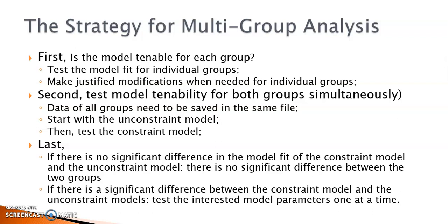Then we test the constrained model, in which model parameters of interest are set to be equal across groups and the overall model fit indices are estimated. In the last step, we compare the model fit — in particular, model chi-square values — to see if there is a significant difference between the constrained and the unconstrained models. If there is no significant difference, we conclude that the model structure fits all groups equally well and there is no difference in the model parameters between the populations from which the samples were taken.